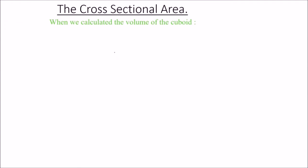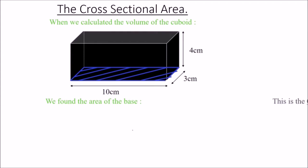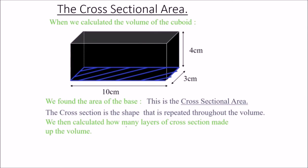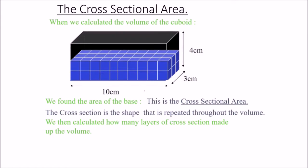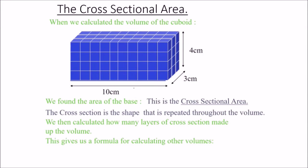When we calculate the volume of a cuboid, we found the area of the base — that is 10 into 3, which is the cross-sectional area. The cross section is the shape that is repeated throughout the volume. We then calculated how many layers of cross sections made up the volume, giving us a general formula.